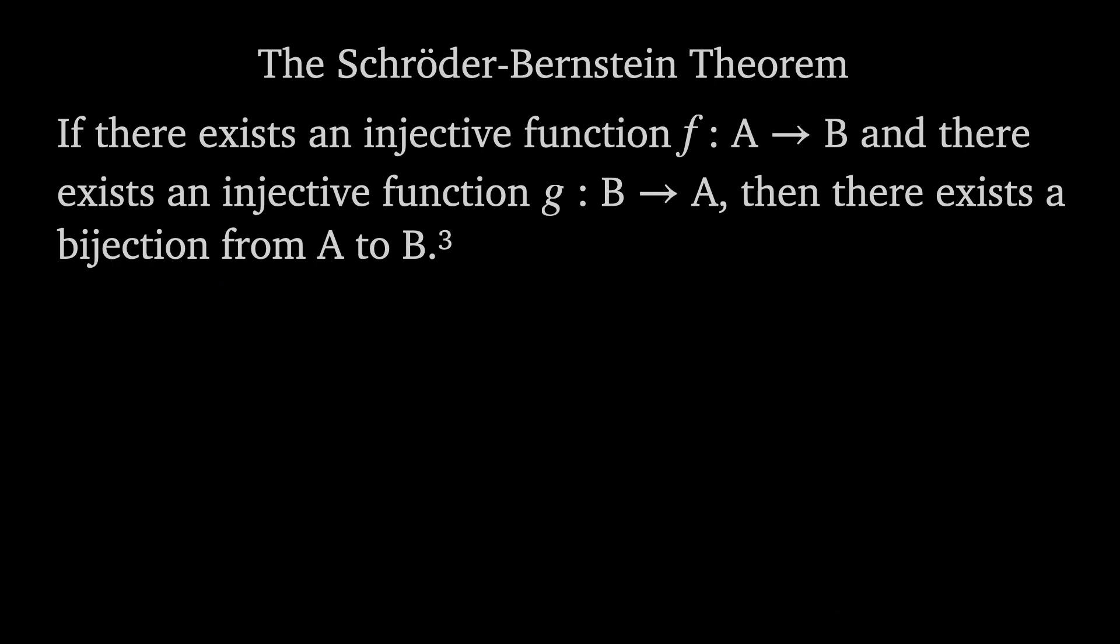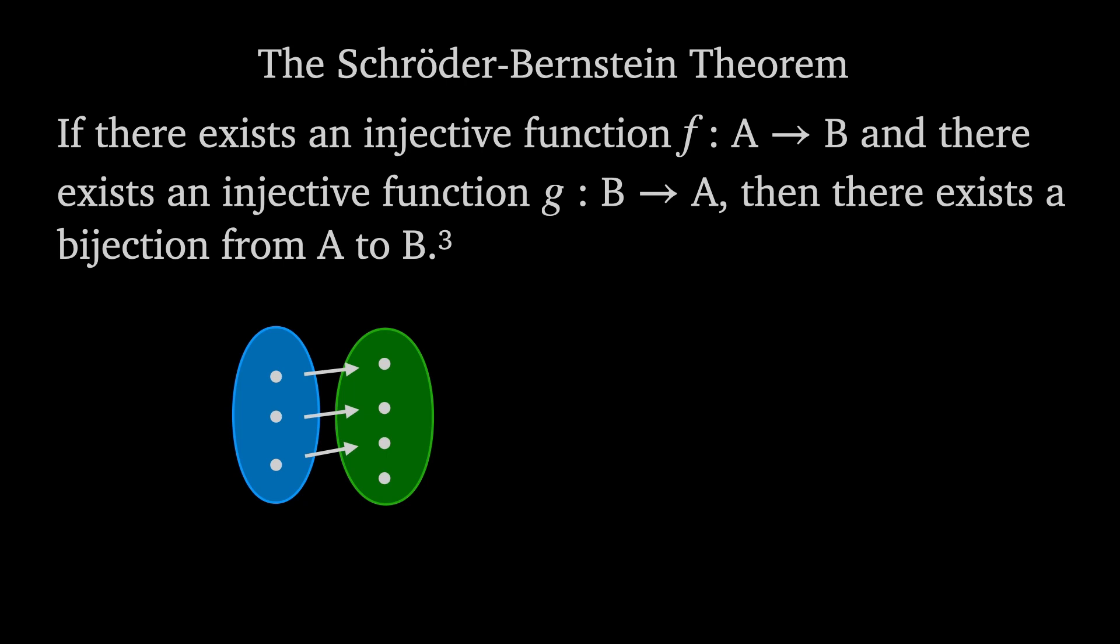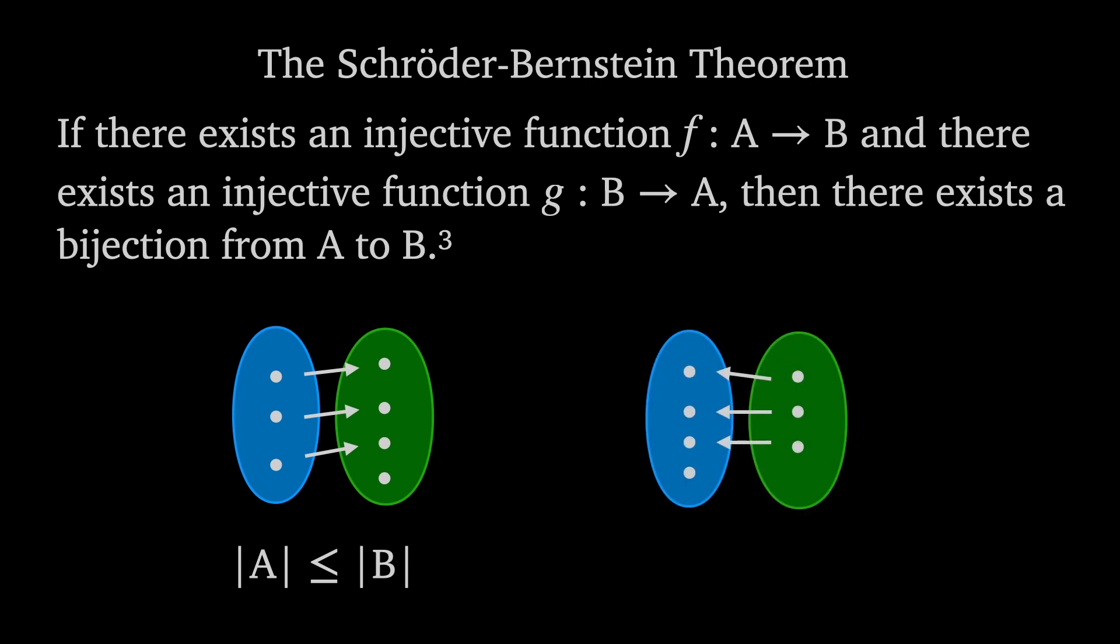This is because in order for there to exist an injective function from A to B, then B must be at least as big as A. If there exists an injective function from B to A, then A must be at least as big as B. Therefore, the sets A and B must be the same size.